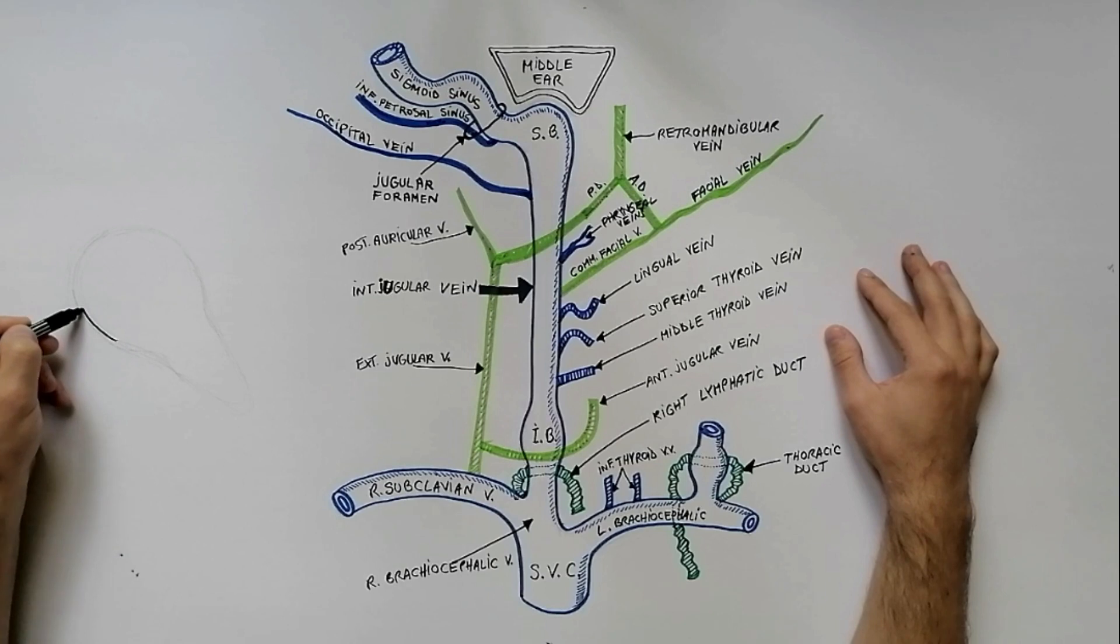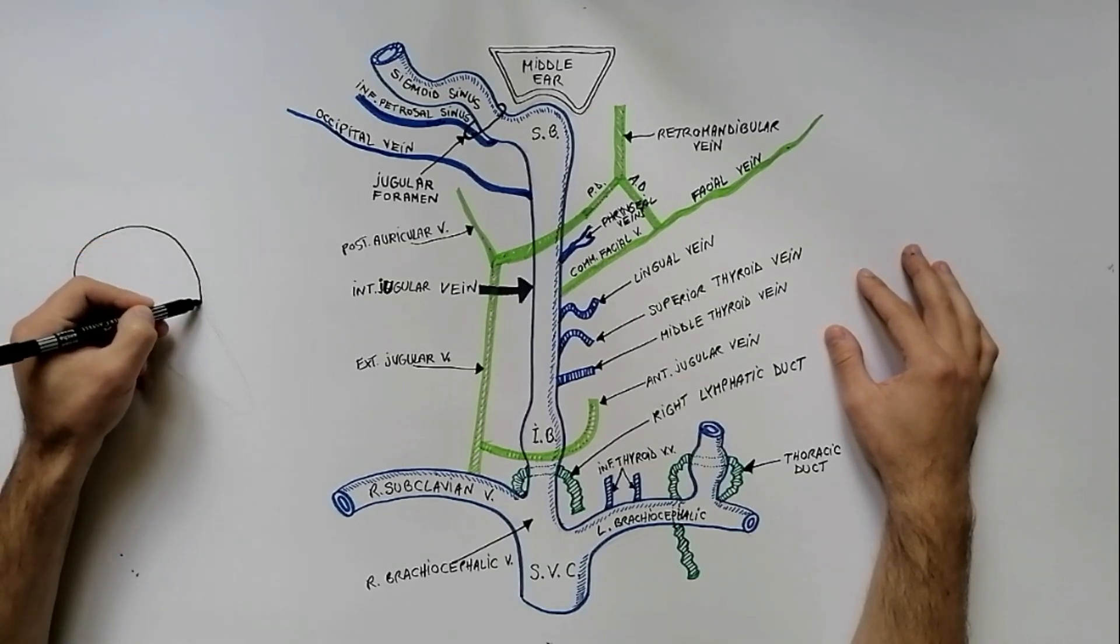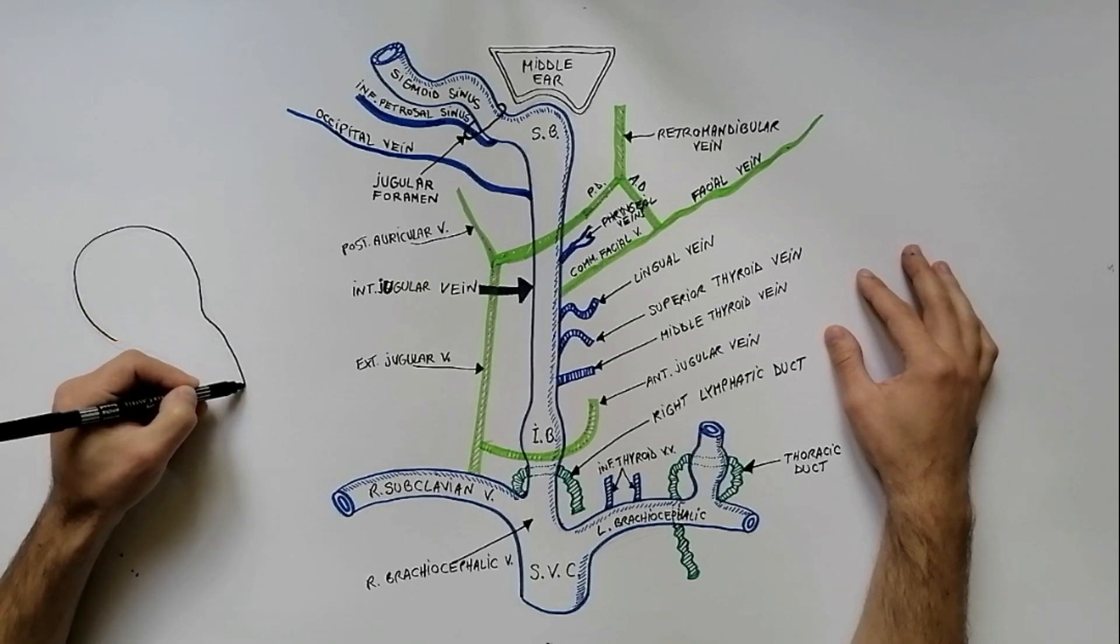We've mentioned that the internal jugular vein exits the skull as a continuation of the sigmoid sinus by way of jugular foramen.